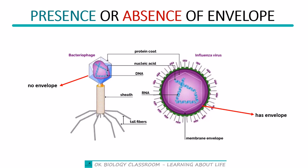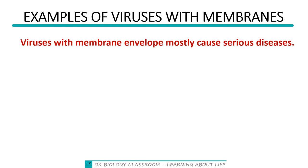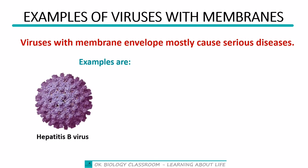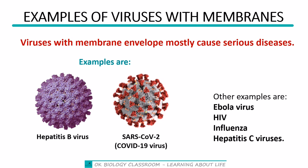Viruses that have the membrane envelope are called enveloped viruses, like influenza virus. Viruses that do not have the membrane envelope are called non-enveloped viruses. Examples of enveloped viruses include hepatitis B virus, SARS-CoV-2 (the COVID-19 virus), Ebola virus, HIV, influenza, and hepatitis C virus. Since enveloped viruses have double protection for their nucleic acid, they are more likely to survive and cause more serious diseases.